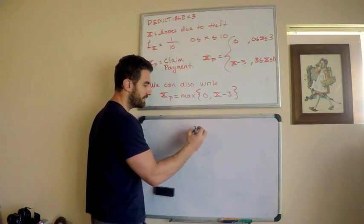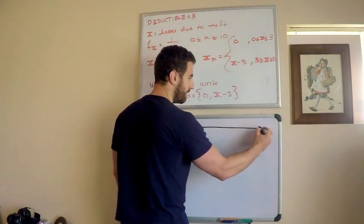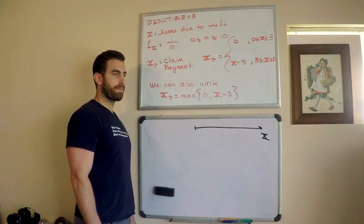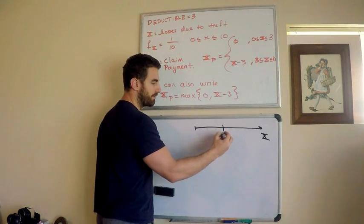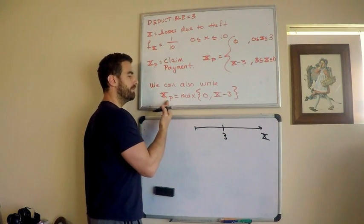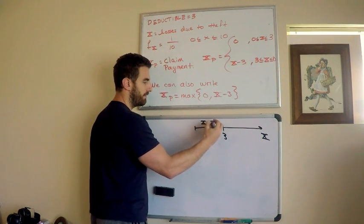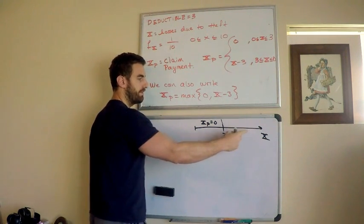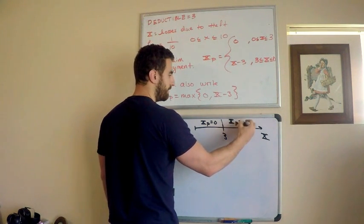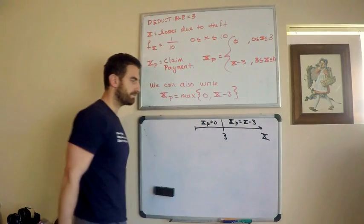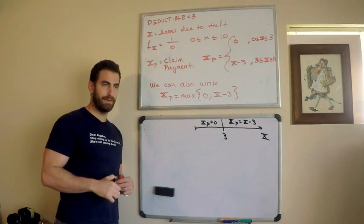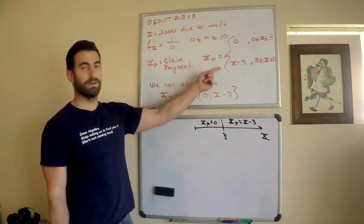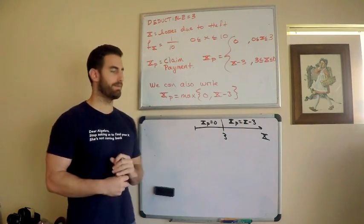It's going to be helpful when I'm looking for the moment generating function. A picture can look like the following. Here, let's say that here is just my axis of the losses. Here are my losses. When my losses are less than the deductible of three, then what is my claim payment equal to? My claim payment is equal to zero. If my losses are greater than three, then my claim payment is equal to x minus three. This is going to help me when I'm figuring out my moment generating function.